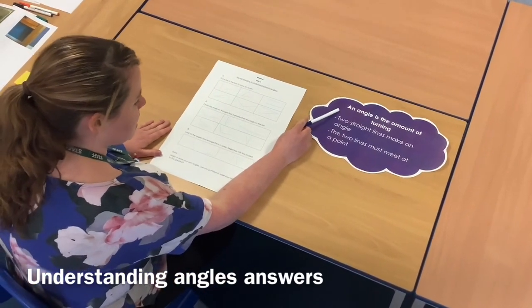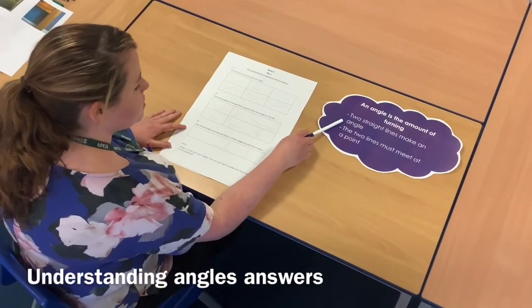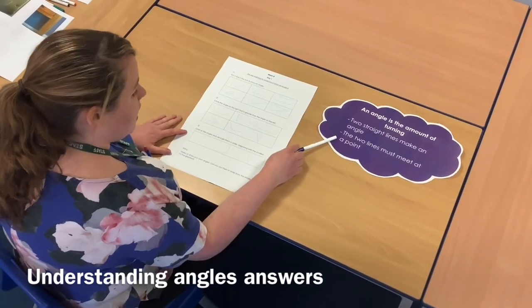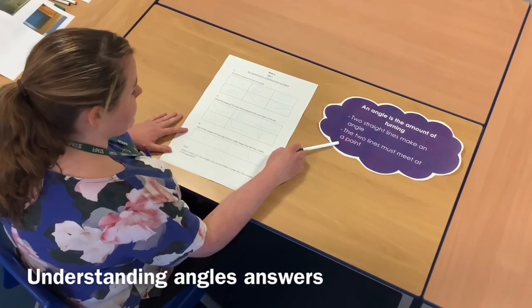So an angle is the amount of turning. Two straight lines make an angle and the two lines must meet at a point.